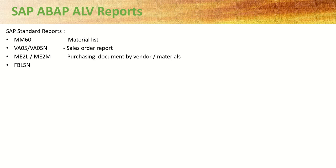Let's see some of the SAP standard reports. SAP has provided many reports in different modules like Material Management, Sales, Finance, etc. We'll check one report like MM60, which is used to display the material list, and then we'll also check some other reports like the sales order report or purchasing document report.